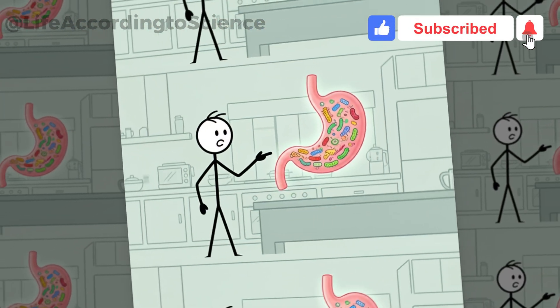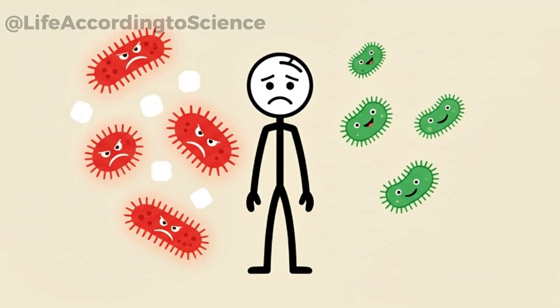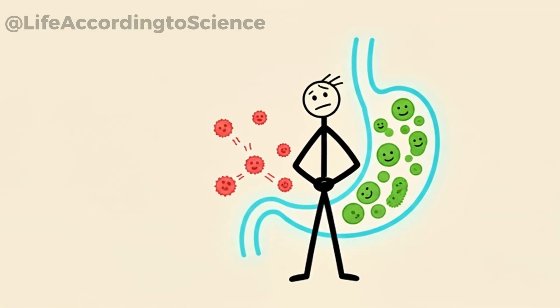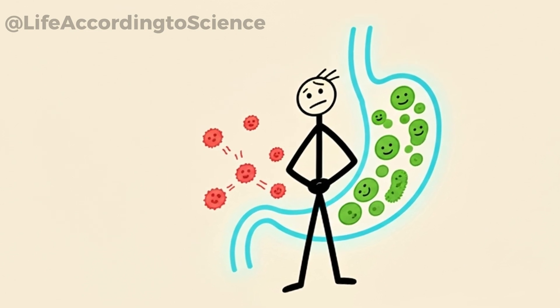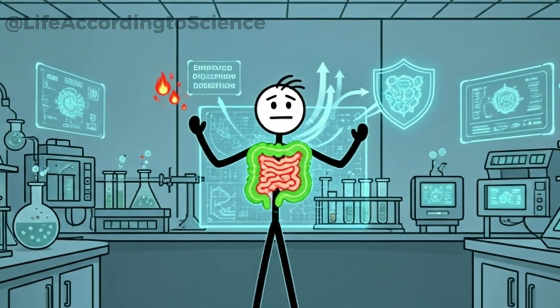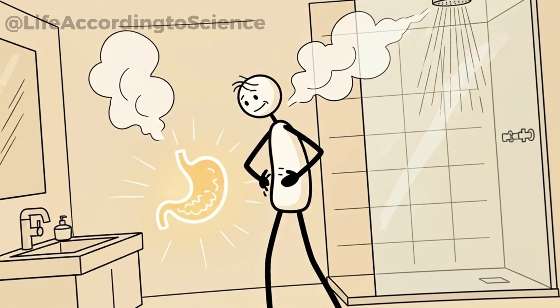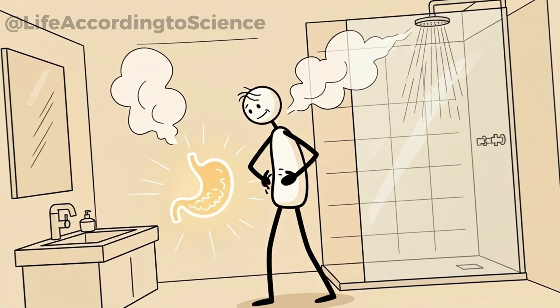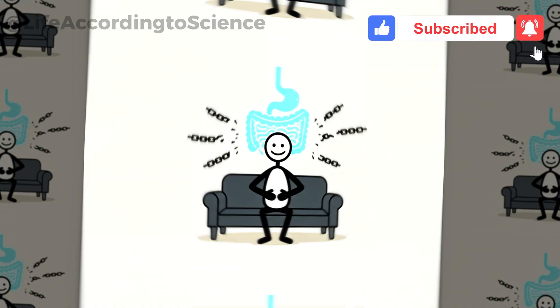Your gut is like a hidden world, home to trillions of bacteria that play a massive role in your health. Sugar, unfortunately, tends to feed the bad bacteria, creating an imbalance that can lead to bloating, gas, and even mood swings. When you cut sugar, that ecosystem begins to shift. Within days, the harmful bacteria starve, while beneficial bacteria flourish. This rebalancing act improves digestion, reduces inflammation, and strengthens your immune system. Your gut microbiome starts to heal. People often notice less bloating, smoother digestion, and even a reduction in random stomach pains. It's as if your digestive system finally gets a break from the chaos sugar brings.